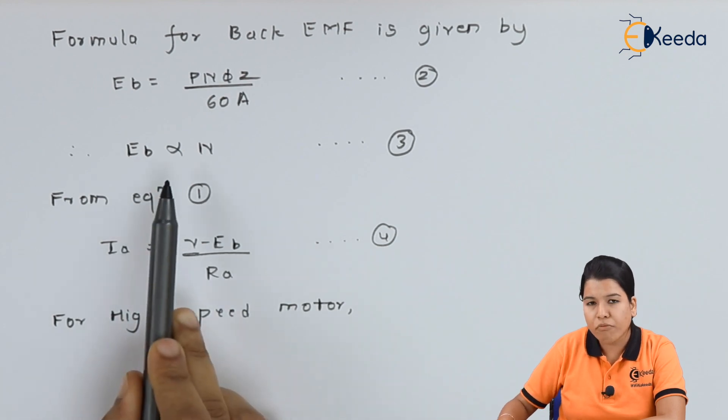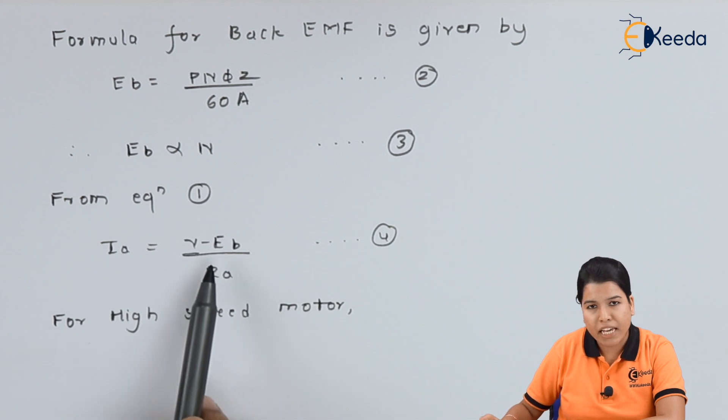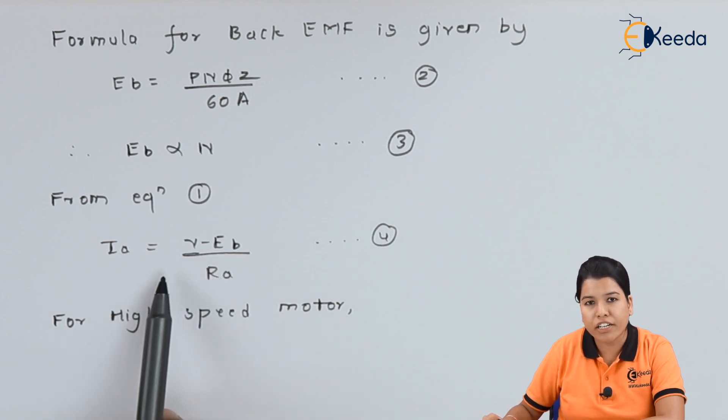If speed of motor is high, the value of back EMF will increase. If the value of back EMF increases, the value of current will decrease. Hence for high speed motor, the current is low.